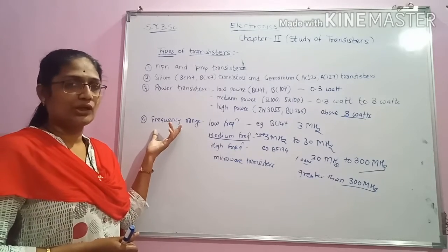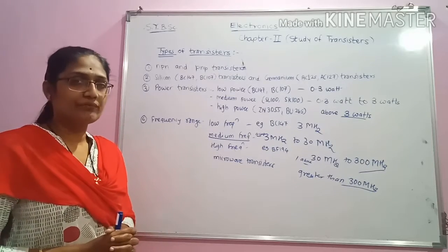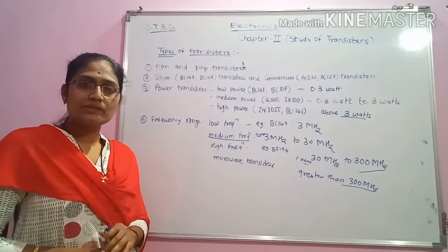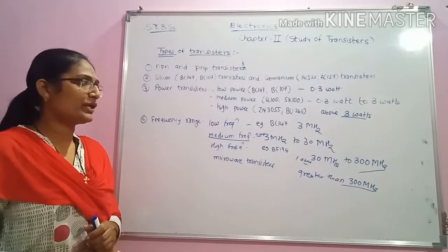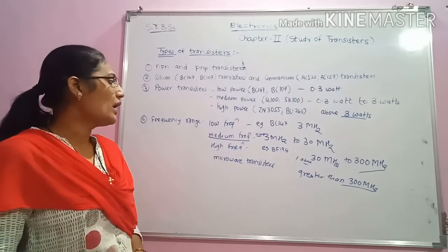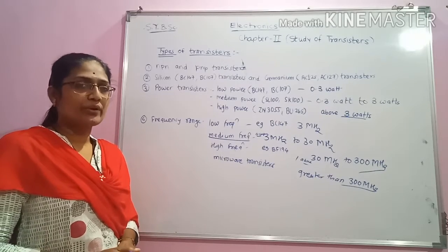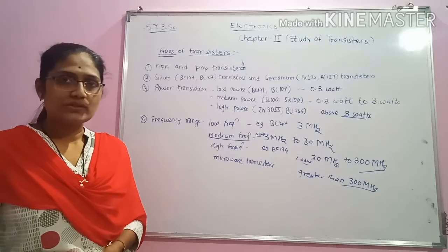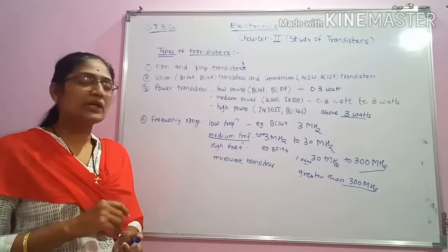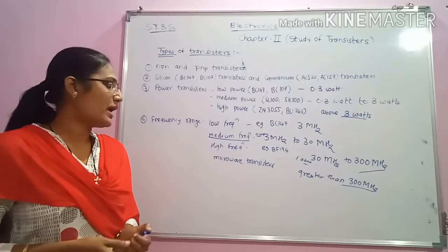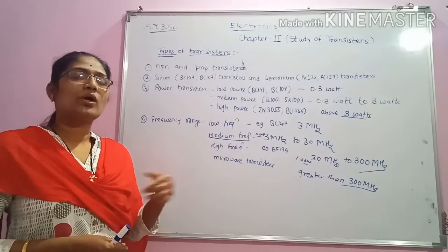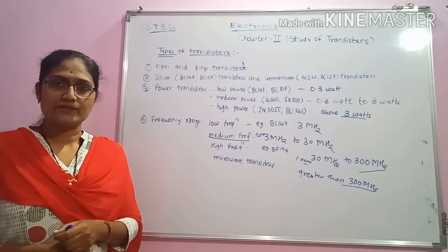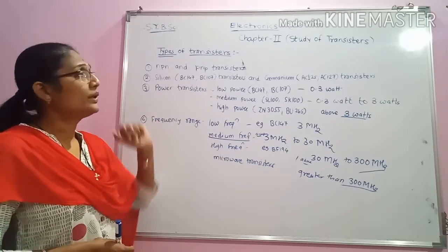Based on the operation frequency range, transistors are classified into low frequency transistors, medium frequency transistors, high frequency transistors, and microwave transistors. Low frequency transistors operate below 3 MHz. Medium frequency transistors operate in the range of 3 MHz to 30 MHz. High frequency transistors operate from 30 MHz to 300 MHz, and microwave transistors operate in the microwave region with frequencies greater than 300 MHz. This is the summary related to types of transistors.